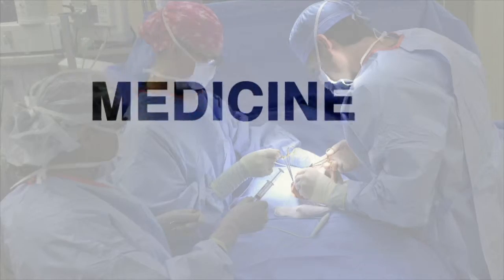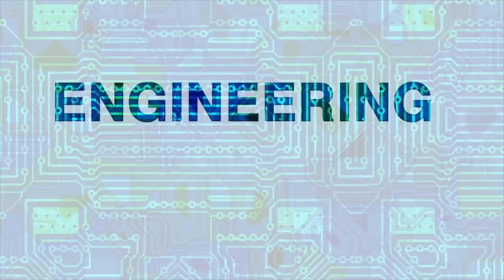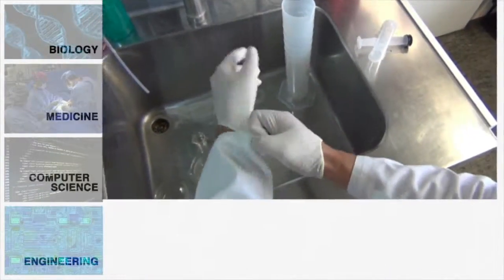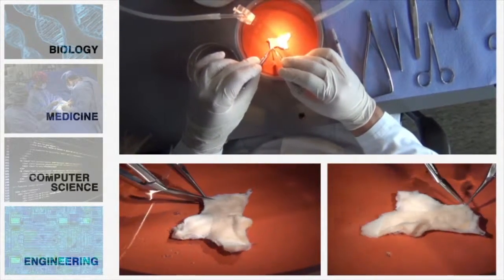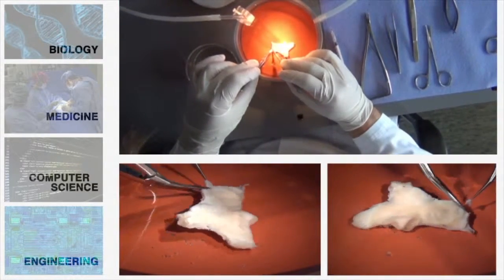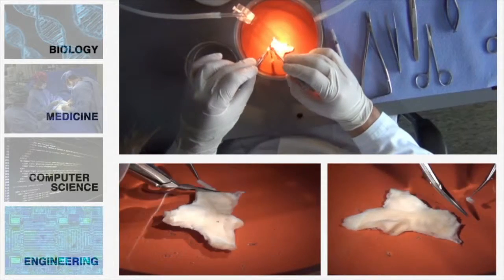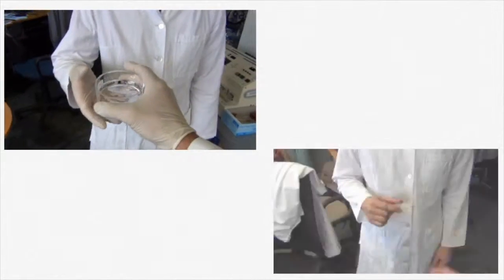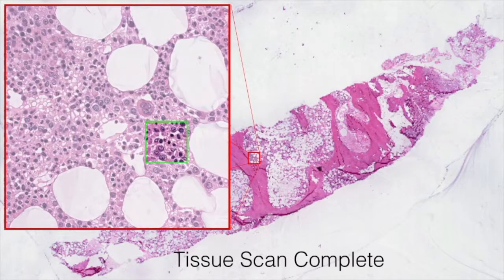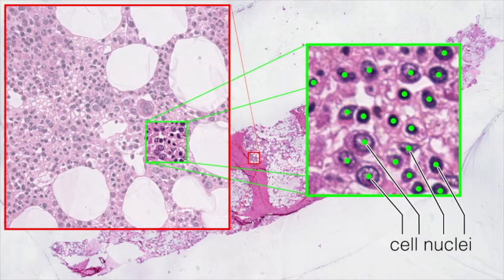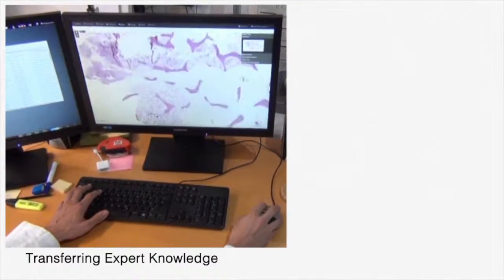In biomedical image analysis, people from biology, medicine, computer science and engineering work together towards the automated analysis of tissue samples. As computer scientists, we can build intelligent systems to assist in medical diagnostics by performing automated tissue analysis faster and more thoroughly than humans, because our systems process huge amounts of data in a very structured way.